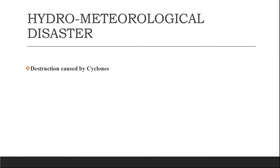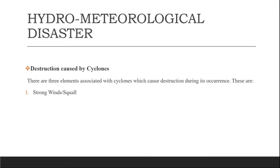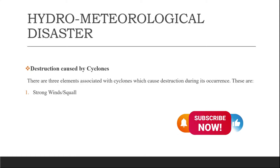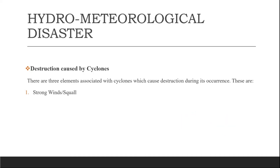There are three elements associated with cyclones which cause destruction during their occurrence. The first is strong wind or squall. Cyclones cause severe damage to infrastructure through high-speed winds, damaging installations, dwellings, communication systems, and trees, resulting in loss of life and property. Gusts are short but rapid bursts in wind speed, while squalls are longer periods of increased wind speed generally associated with bands of thunderstorms that make up the spiral bands around cyclones.